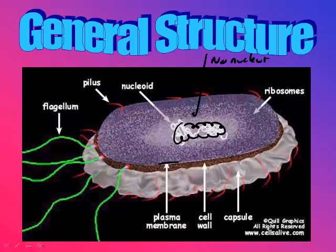There is a plasma membrane, which allows things to move in and out. And just like the plant cell, it also has a cell wall — we'll talk about the structure of that in a few minutes. It also has flagellum, which help with movement, and then a pilus — these little hair-like structures.